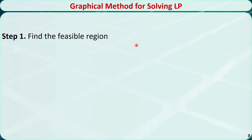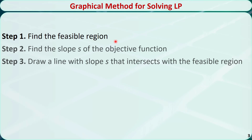For a linear programming problem with two variables, we can solve it graphically by following these steps. Step 1: find the feasible region — I already introduced how to do that in a previous video. Step 2: find the slope s of the objective function.